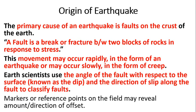The origin of an earthquake. The primary cause of an earthquake is the fault on the crust. Whenever there is fault movement between blocks of rocks, that will result in earthquakes, caused by the stress acting on the two fault lines. The movement may occur rapidly as an earthquake or slowly as creep. Scientists use the angle of the fault with respect to the surface — known as dip — and the direction of slip along the fault to classify the faults.